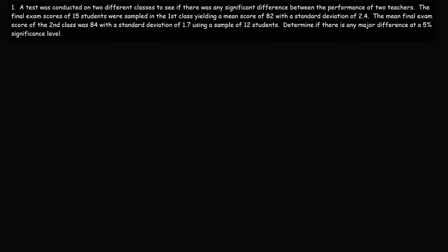What we have here is two separate independent groups. The first group of students does not depend on the grades of the second group. Now we need to write down the information that we have. For the first class, using the subscript 1: the sample size n1 is 15. The sample mean for the first class is 82, and the sample standard deviation s1 is 2.4.